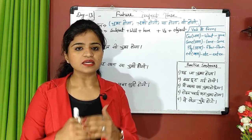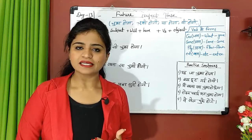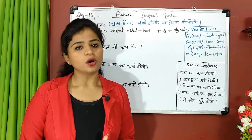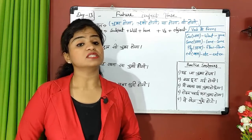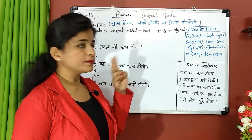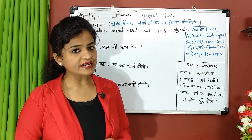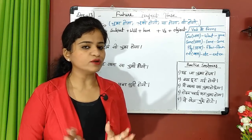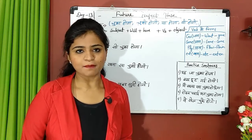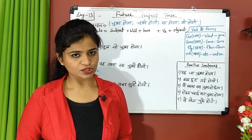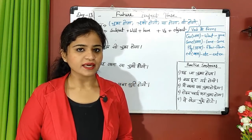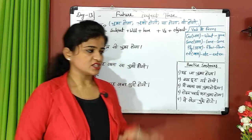In English Grammar, tenses are the most important. There are 3 tenses: present tense, past tense, and future tense. We have learned the past and present tense, covering 4 subtypes each. We have also learned 2 types of future tense: future indefinite and future continuous. If you have missed any of those, links to all the videos from the last 12 days are in the description.